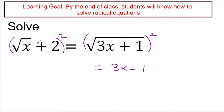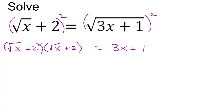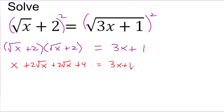Let's figure out how to square the left side. Squaring means multiplying it by itself, so I write the square root of x plus 2, times itself. Now I need to FOIL this expression. The square root of x times the square root of x gives x. The square root of x times 2 gives 2 square root of x. I get another 2 square root of x from the second term in the FOIL. And at the end, 2 times 2 gives 4. So this is equal to 3x plus 1. Cleaning up, the two middle terms combine to give 4 times the square root of x, and I bring down the x and the 4.